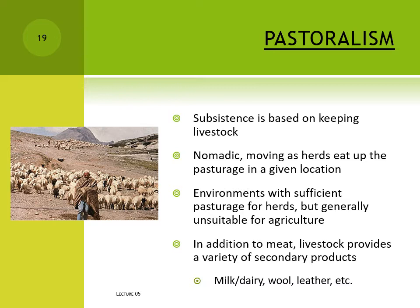Animals also provide a whole range of secondary products in addition to their meat: milk and dairy products, leather, fiber, bone, sinew, and so forth. The animals act as storage containers and resource factories, storing the grass food and converting it into useful materials, and doing so with a relatively low investment of time and labor on the part of the pastoralists.